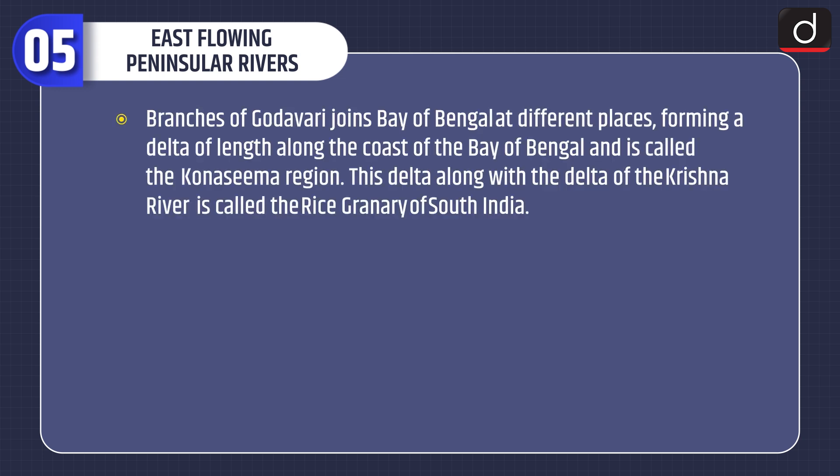The branches of the Godavari join the Bay of Bengal at different places, forming a delta along the coast called the Konaseema region. This delta, along with the delta of the Krishna river, is called the Rice Granary of South India.